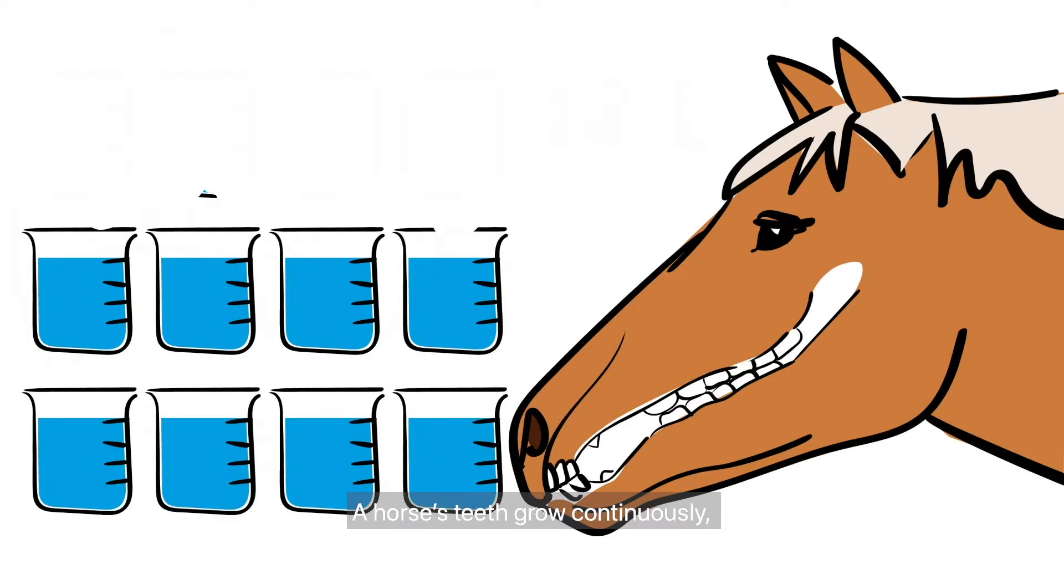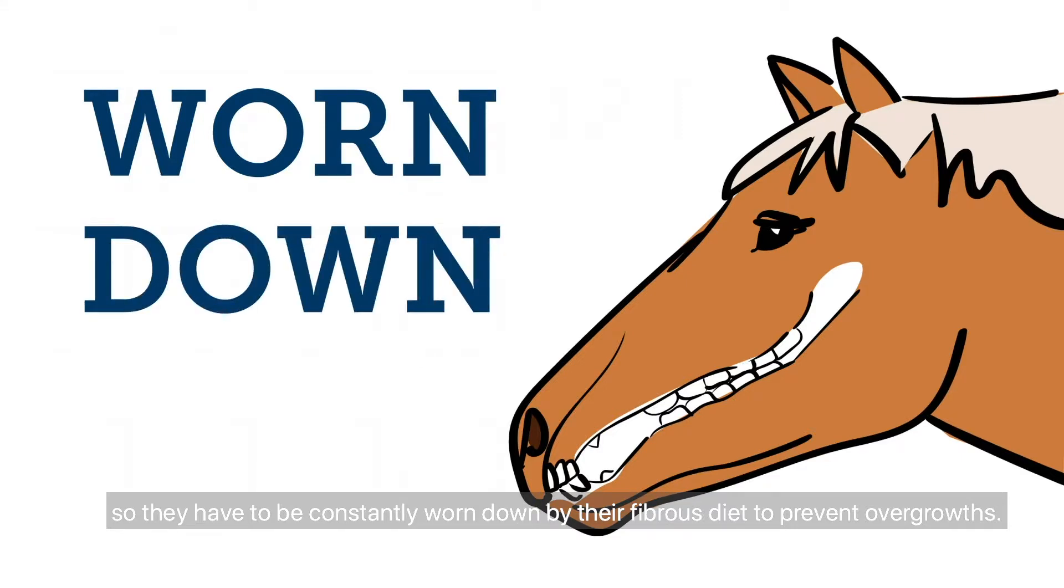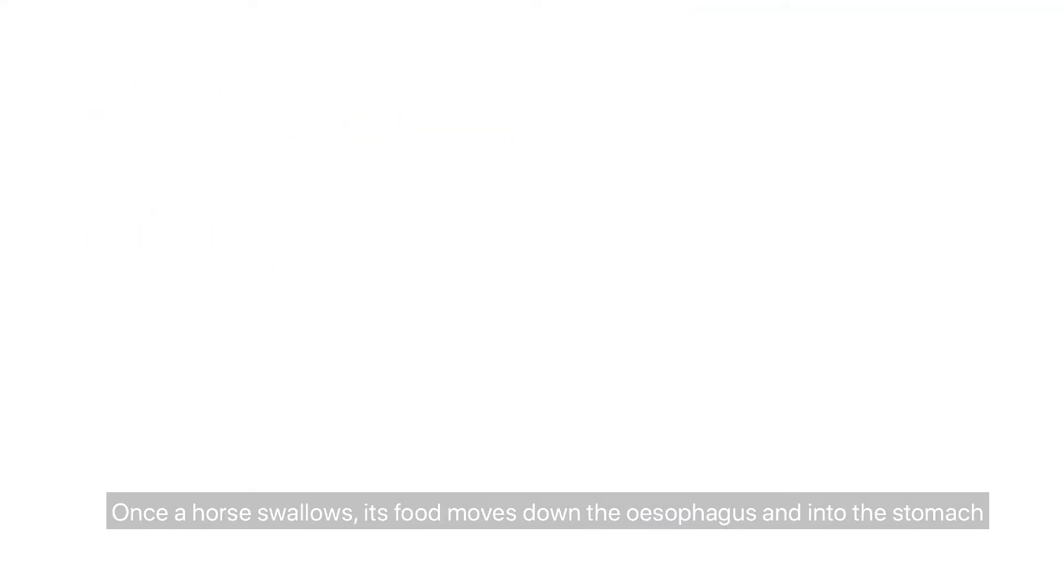A horse's teeth grow continuously, so they have to be constantly worn down by their fibrous diet to prevent overgrowth.